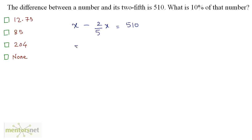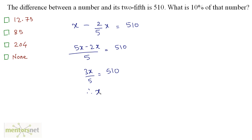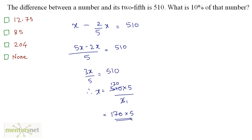Let us solve this. We have 5x minus 2x upon 5 is equal to 510, so 3x by 5 is equal to 510. Therefore x is equal to 510 times 5 divided by 3. Since 510 is divisible by 3, we get 170, so x is equal to 170 times 5.